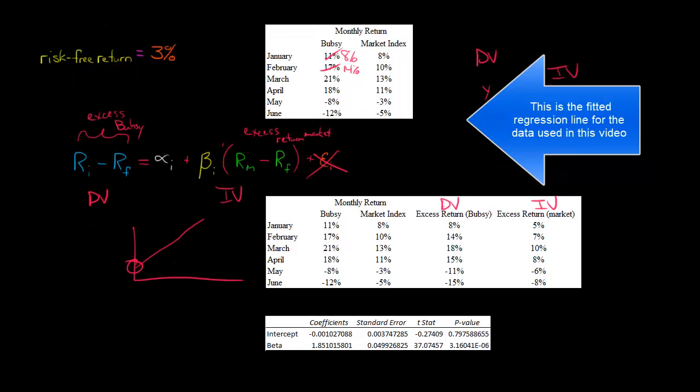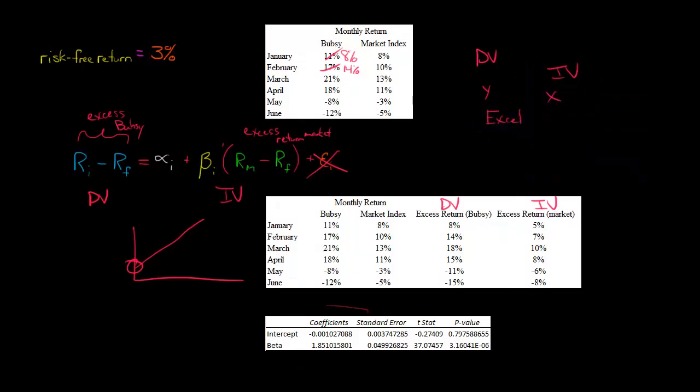I went and—the purpose here isn't to show you how to run regressions, I can make another video on that—but these are the results I get. I just used Excel, but you can use SPSS or something like that. The coefficient estimate for beta, for our independent variable, is 1.85. There's a bunch of other digits, but let's just stick with 1.85.